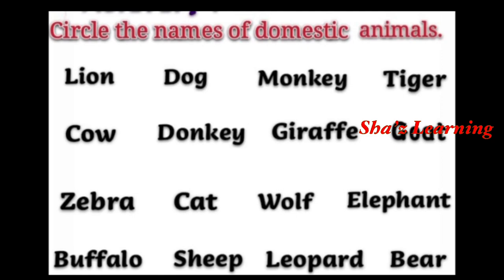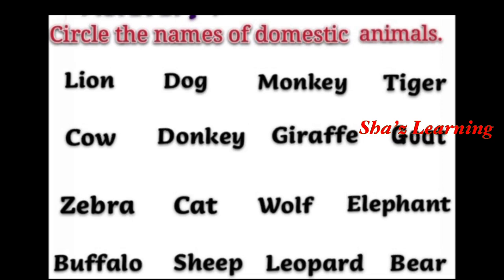What do you mean by wild animals? Wild animals are living in the forest. For example, tiger and lion. If you see a tiger or lion in the street, you would call them wild animals. Domestic animals are the ones we keep with us.